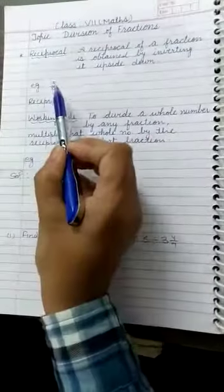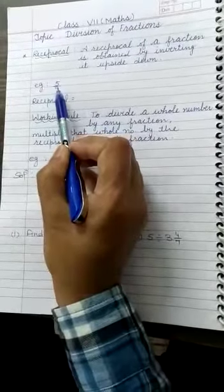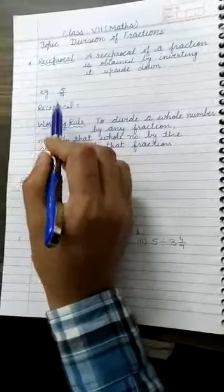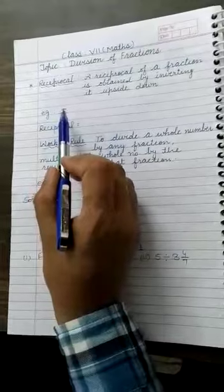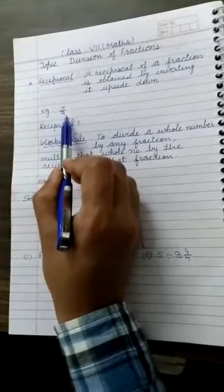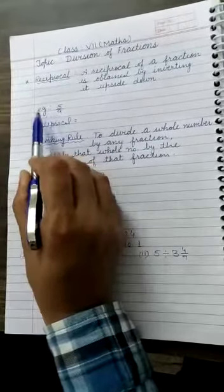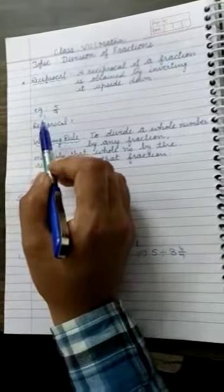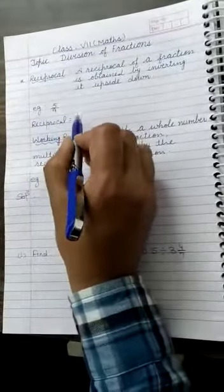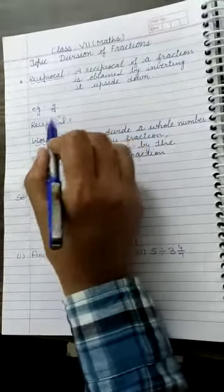It means if we have a fraction like 5 by 9 and if we want to find its reciprocal, then what we have to do? We have to make the numerator as denominator and denominator as numerator, means we have to just invert it upside down. Means upper part will become lower and lower part will become upward.